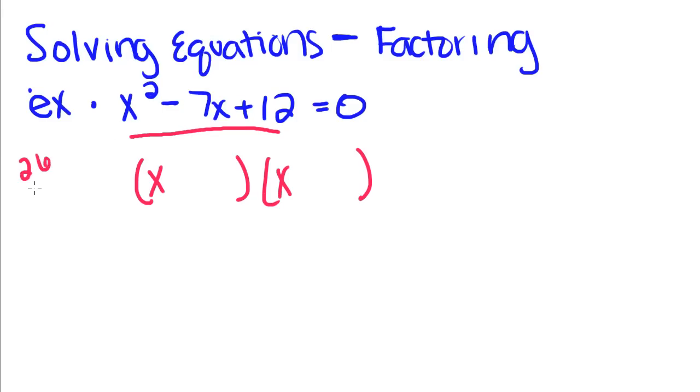2 and 6, 4 and 3, 12 and 1. So 4 and 3 are what's going to add to give us negative 7. That means negative 4 and negative 3, which if you add those together, they'll give you negative 7. And if you remember, when you multiply a negative by another negative, you're going to get a positive. So this is still equal to zero.